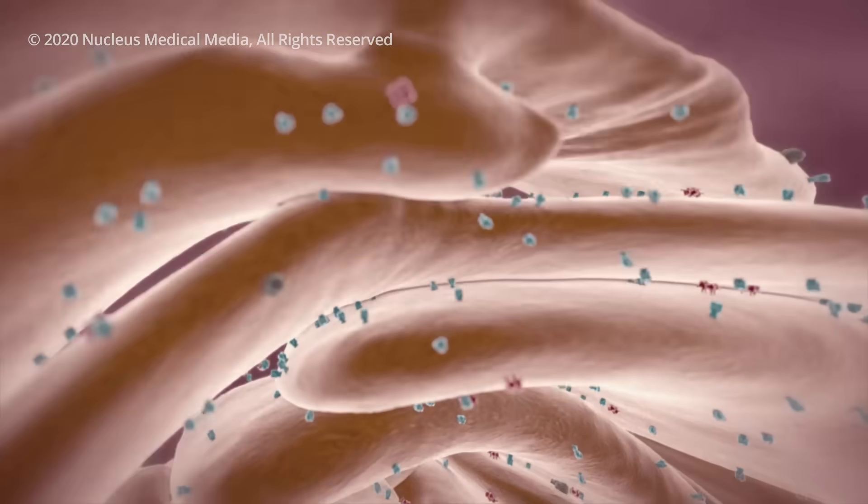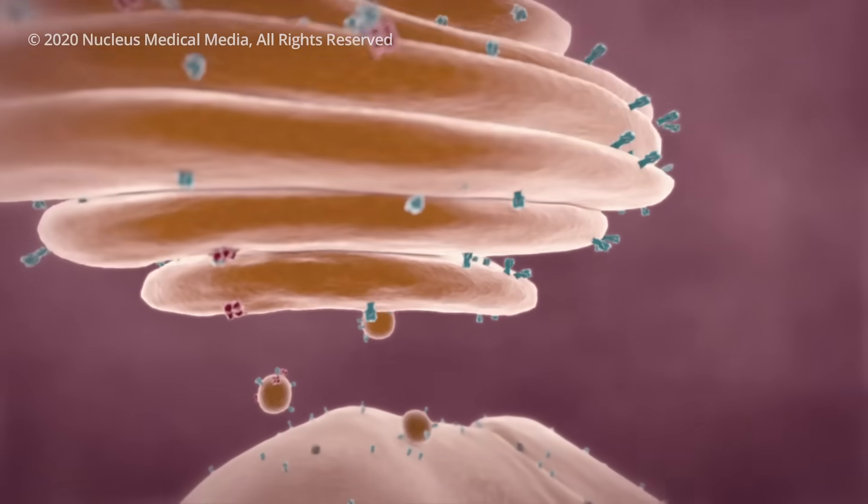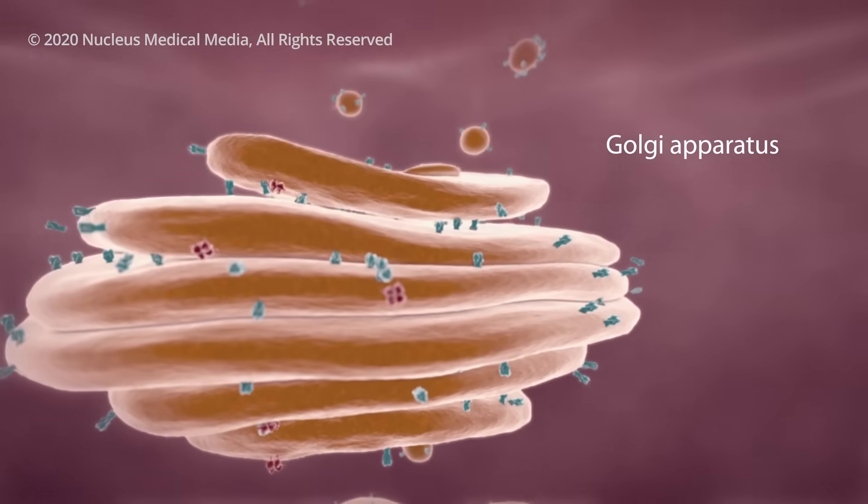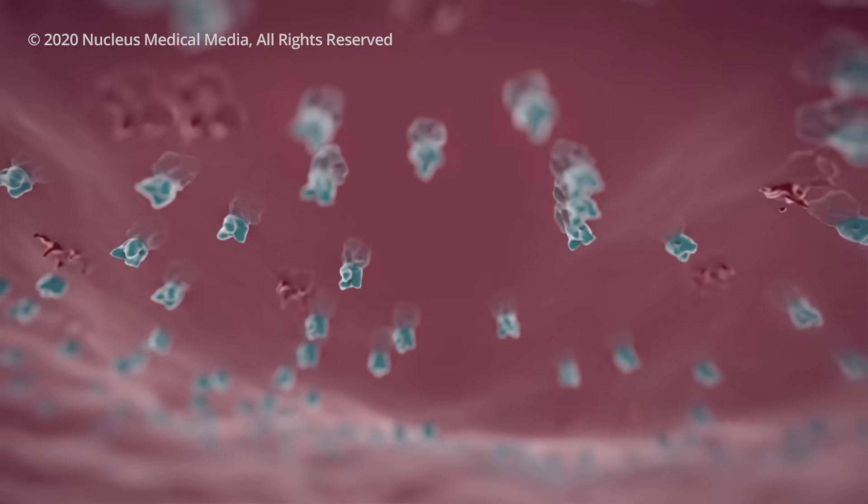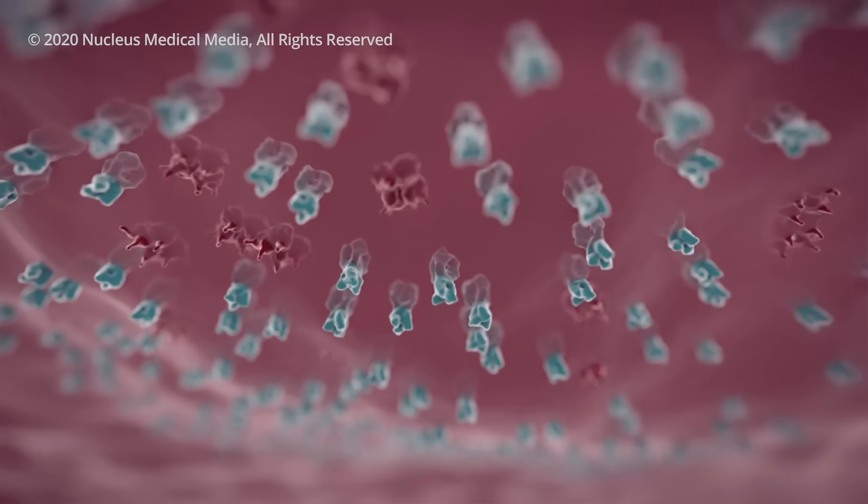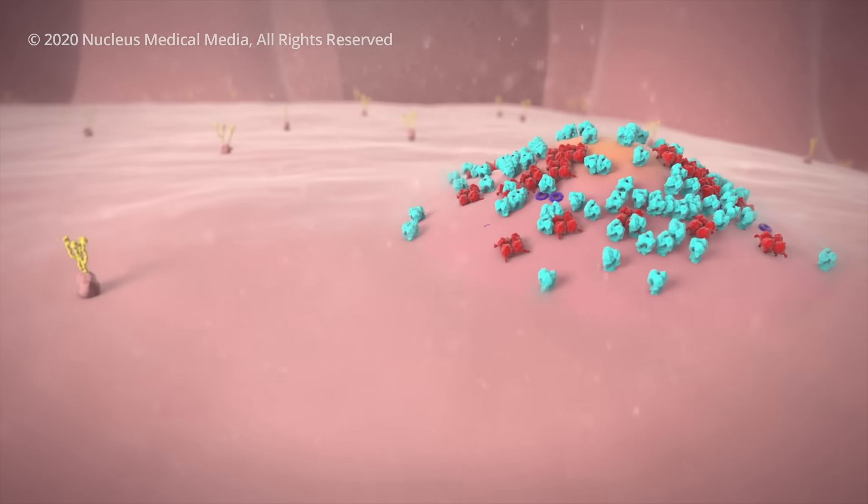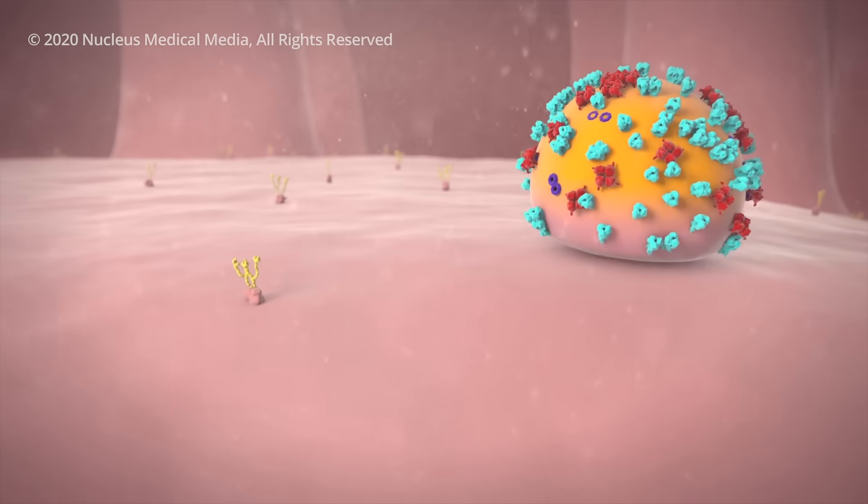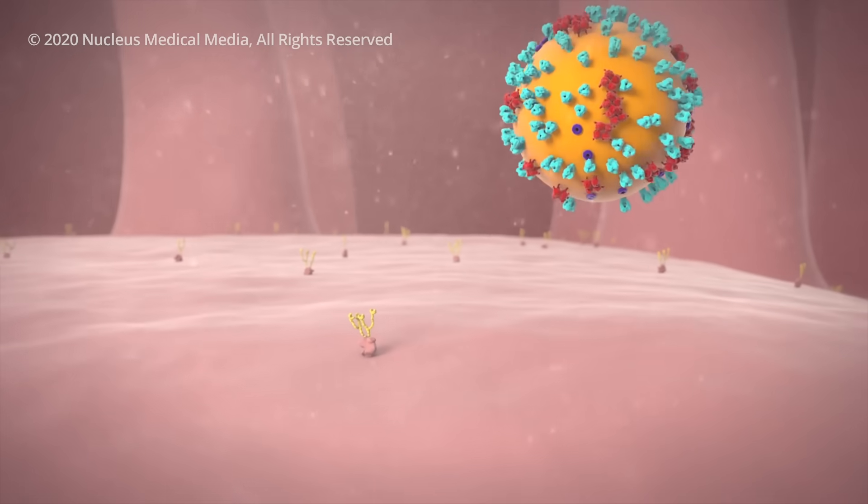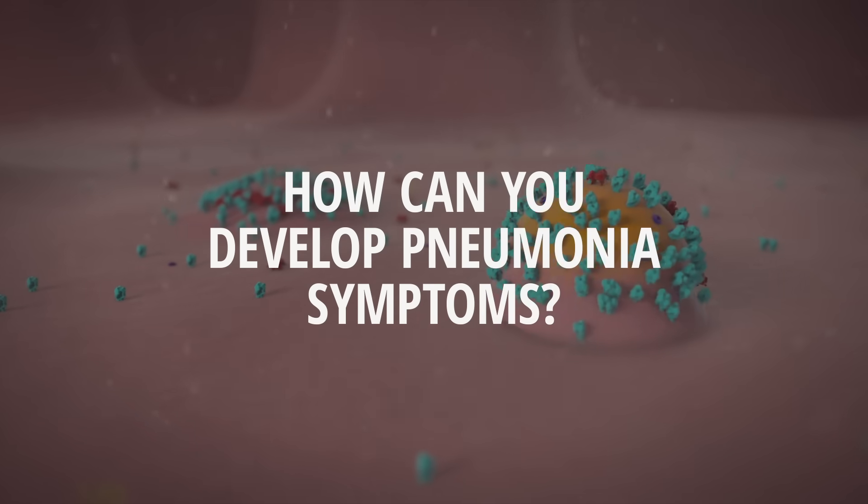A packaging structure in your cell then carries the spikes in vesicles which merge with your cell's outer layer, the cell membrane. All the parts needed to create a new virus gather just beneath your cell's membrane. Then, a new virus begins to bud off from the cell's membrane. Now, with the virus spreading in your body, how can you develop pneumonia symptoms?